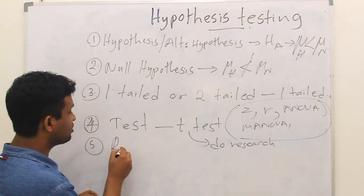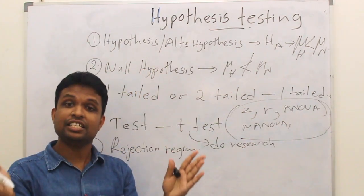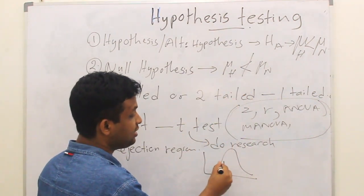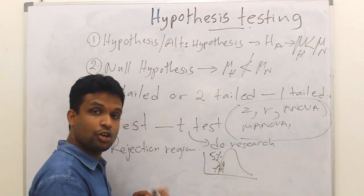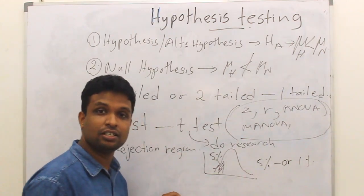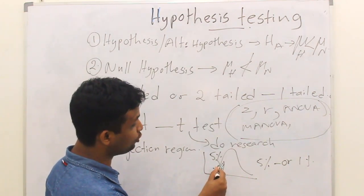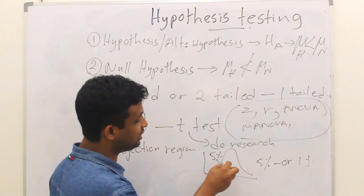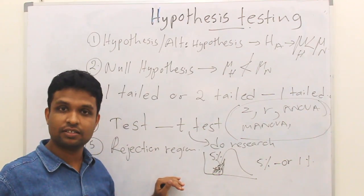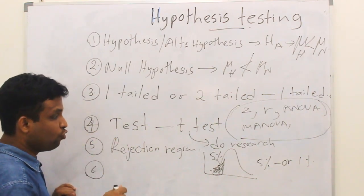We call that the rejection region. In the null distribution, what is the exact area? We are interested in 5% of the null distribution. Whether you are interested in 5%, 1%, or 10% — you decide the exact percentage as the rejection region, because you are going to reject the null hypothesis if the result falls in this range. You decide your rejection region based on your experience and past evidence.